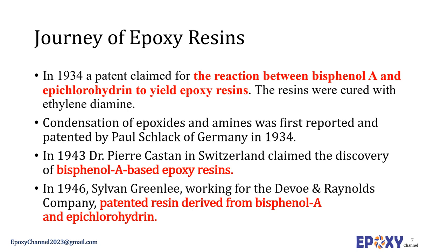In 1946, Sylvan Greenlee, who worked for De Trey Reynolds Company, patented a resin derived from bisphenol A and epichlorohydrin. De Trey Reynolds, which was active in the early years of the epoxy resin industry, was sold to Shell Chemical. The division involved in this work was eventually sold through a series of corporate transactions and is now a part of Hexion Inc.